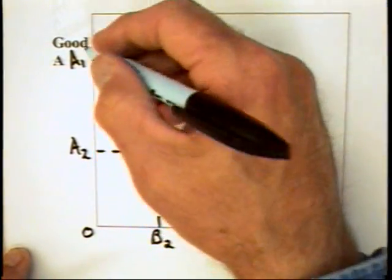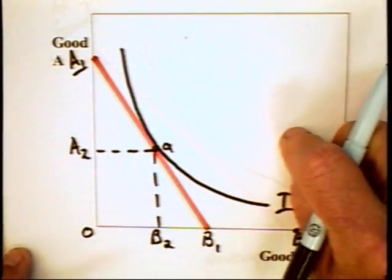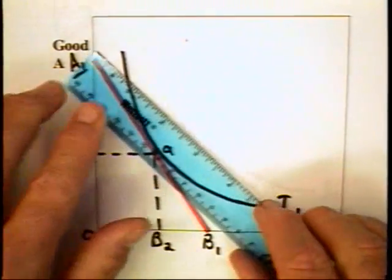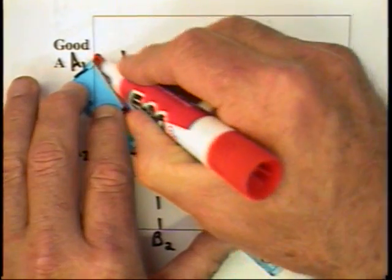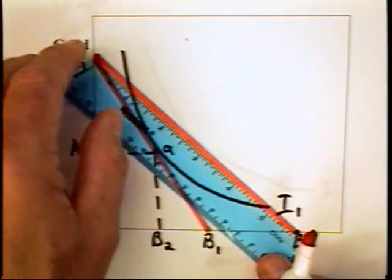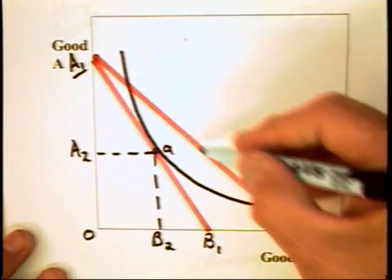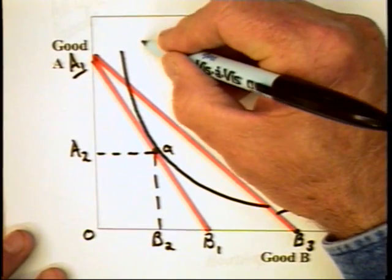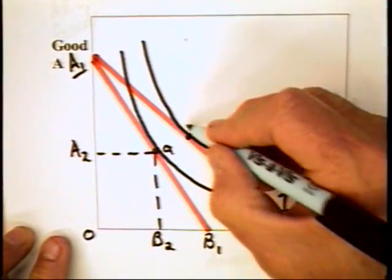They can only buy combination A1. So the new budget line extends from combination A1 to combination B3. It looks something like this. And we can anticipate that the individual will now move out along the new budget line. And we can say that the budget line could in fact have an indifference curve that is tangent at point B.